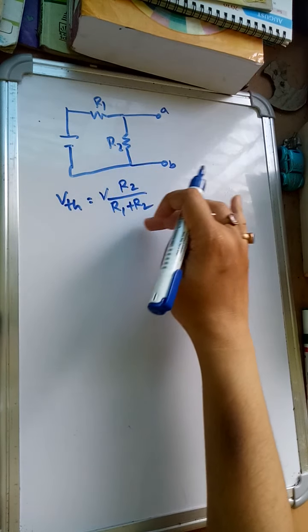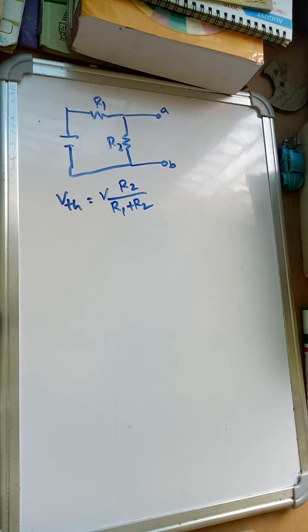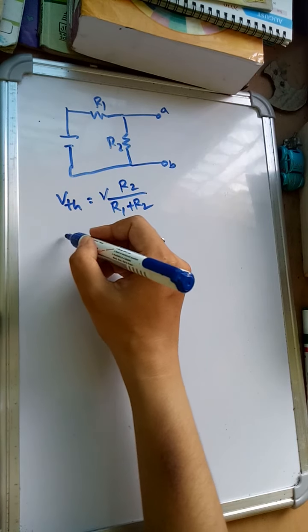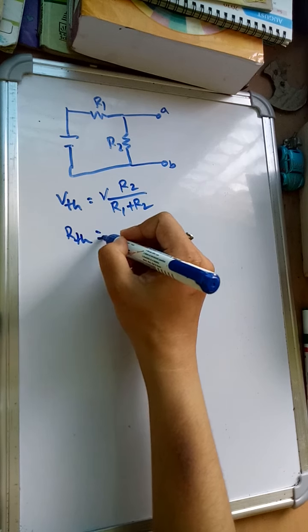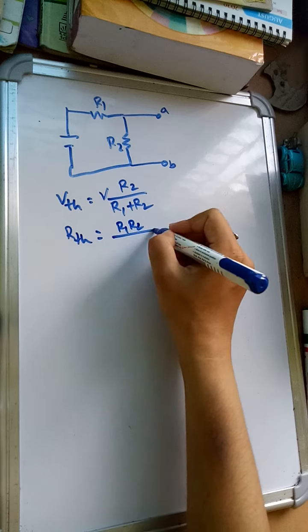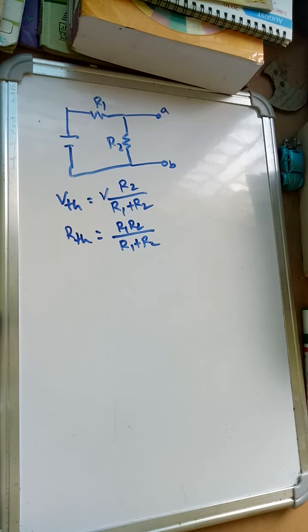This formula is being applied in the earlier example also. Now the Thevenin's equivalent resistance Rth will be R1 parallel R2. The voltage source will be replaced by internal resistance, so Rth will be R1 parallel R2, so it will be R1*R2 divided by R1 plus R2.